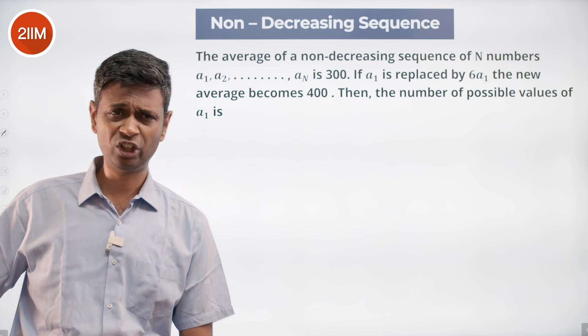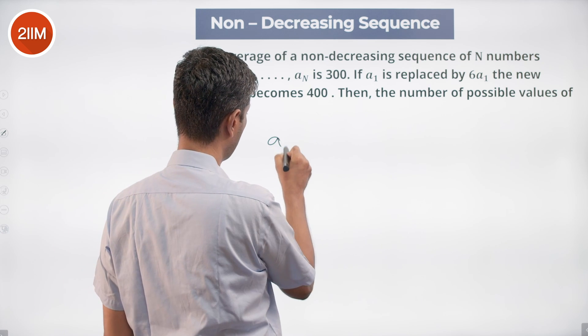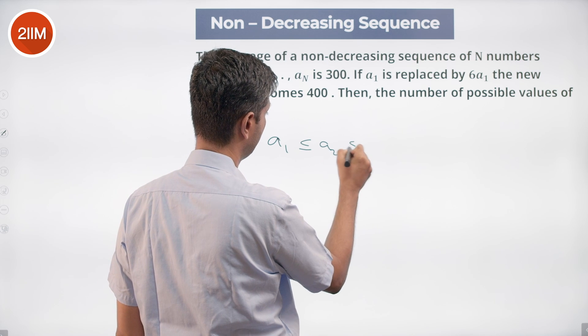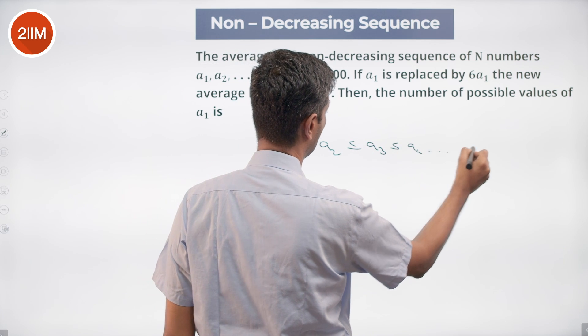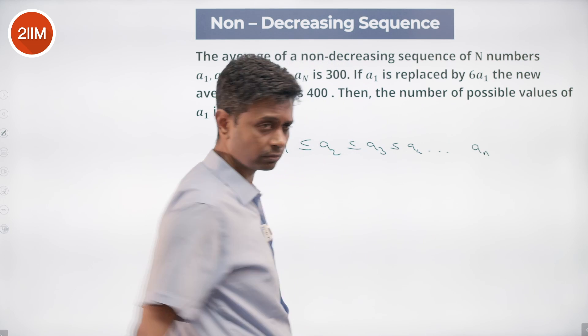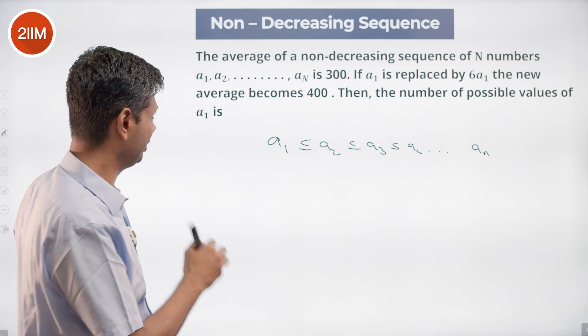Non-decreasing sequence - what does it mean? It means a₁ ≤ a₂ ≤ a₃ ≤ a₄, all the way to aₙ. Something to keep in mind.